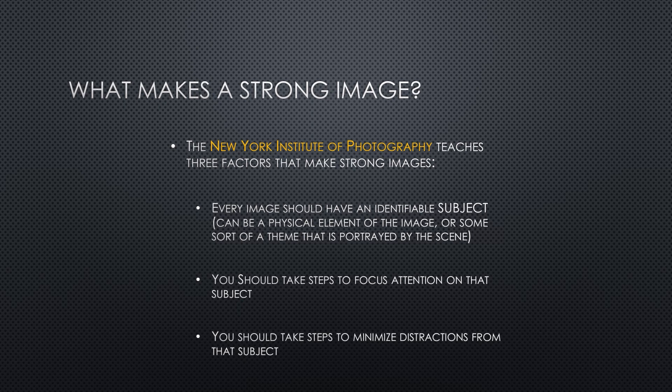And that takes us into number two, that we as a photographer should be taking steps to focus attention on that subject. We can do that in a number of ways, with a lot of our different compositional techniques that we'll cover a little bit later on, things like the rule of thirds, things like color theory, framing, size of the subject within the frame. And finally, we as photographers should be taking steps to minimize distractions from that subject. This is where amateur photographers will see things like garbage cans sitting in the background of a beautiful image or a telephone pole sprouting out of the head of a subject. We want to do things as a photographer that will eliminate those sorts of distractions as best as we possibly can.